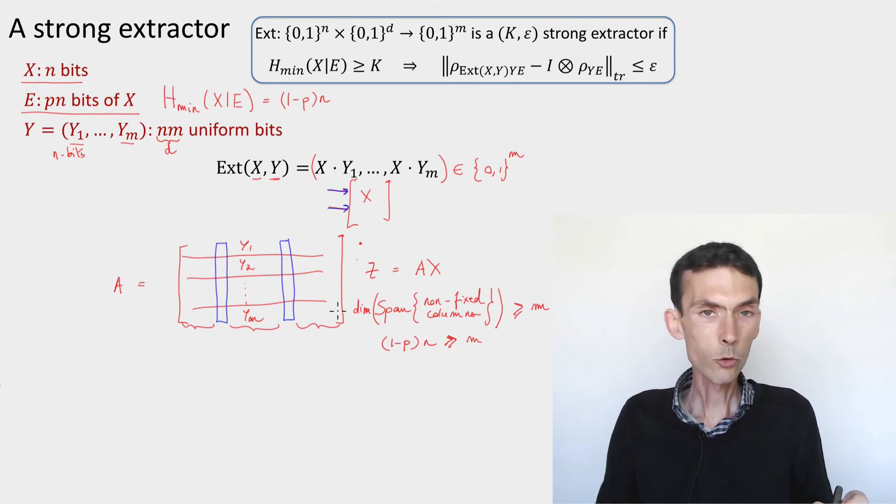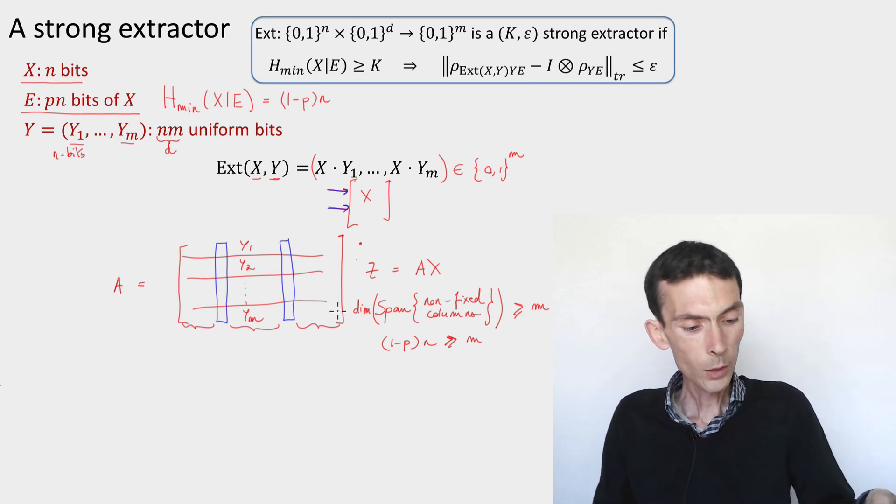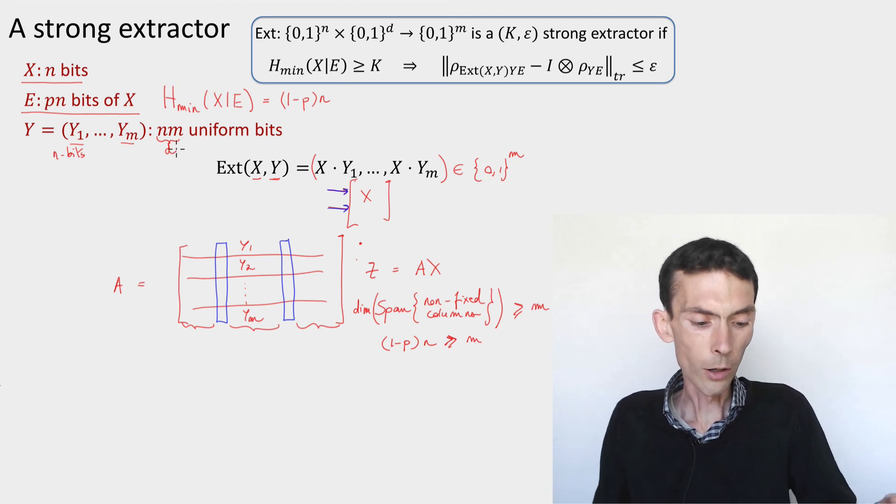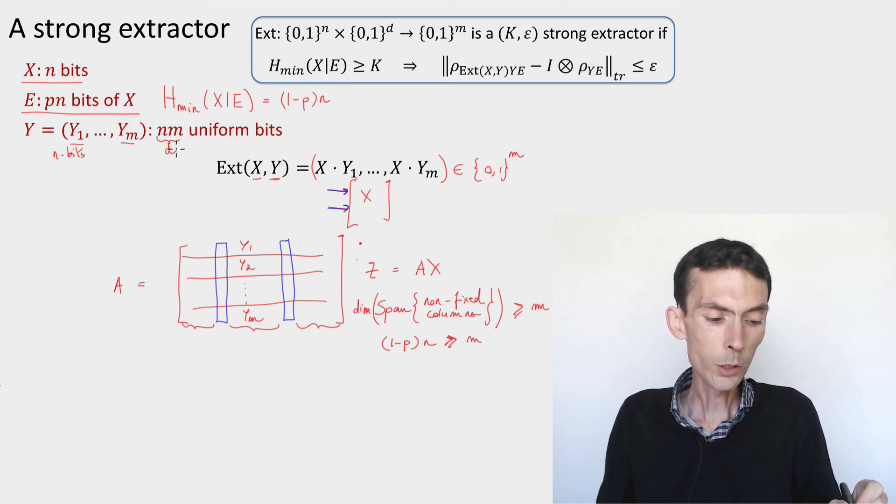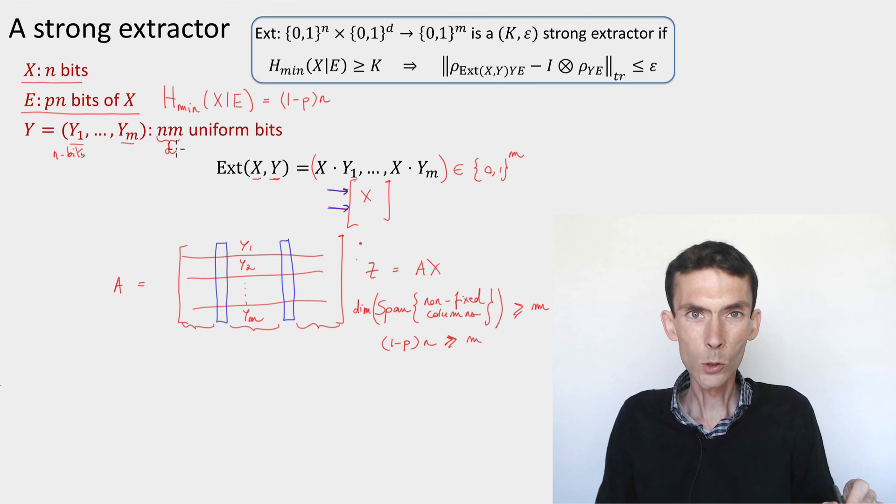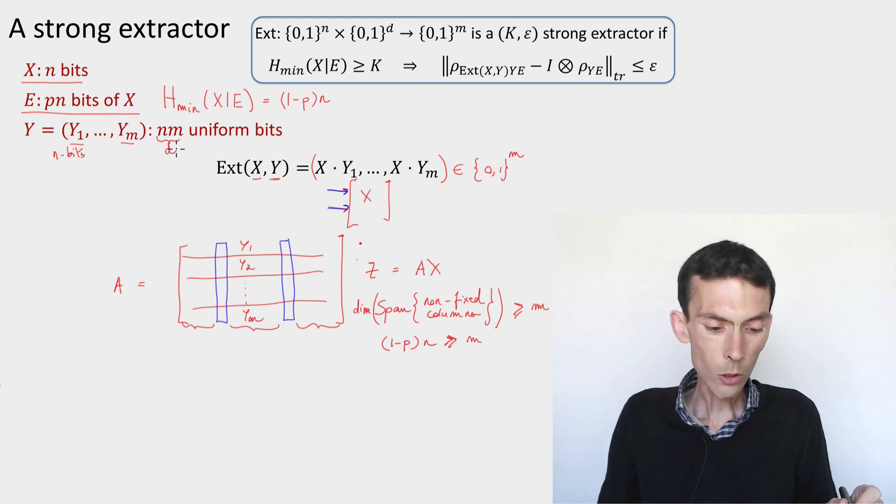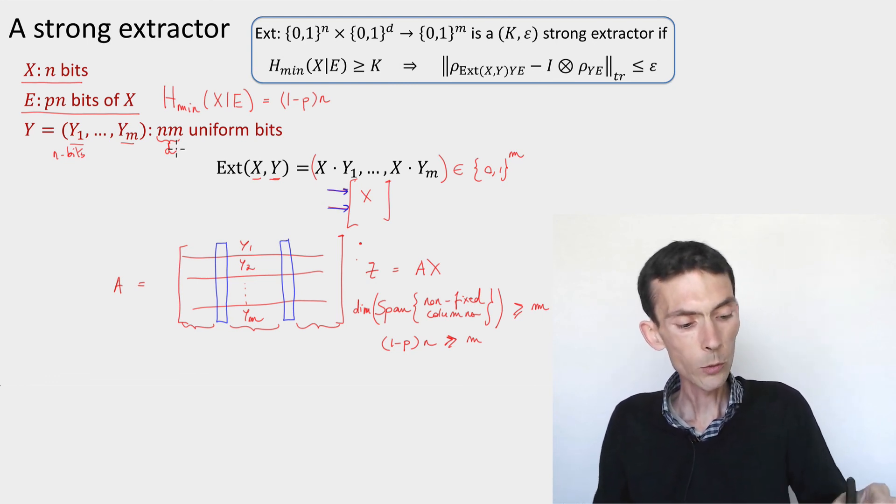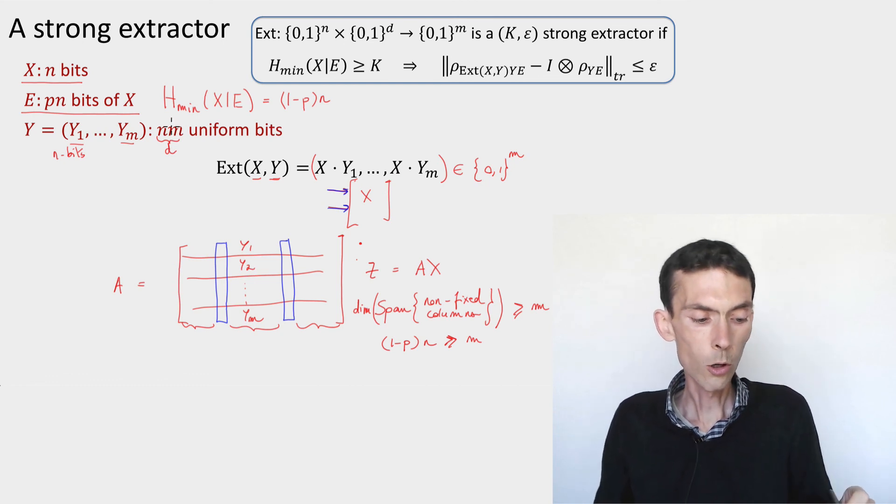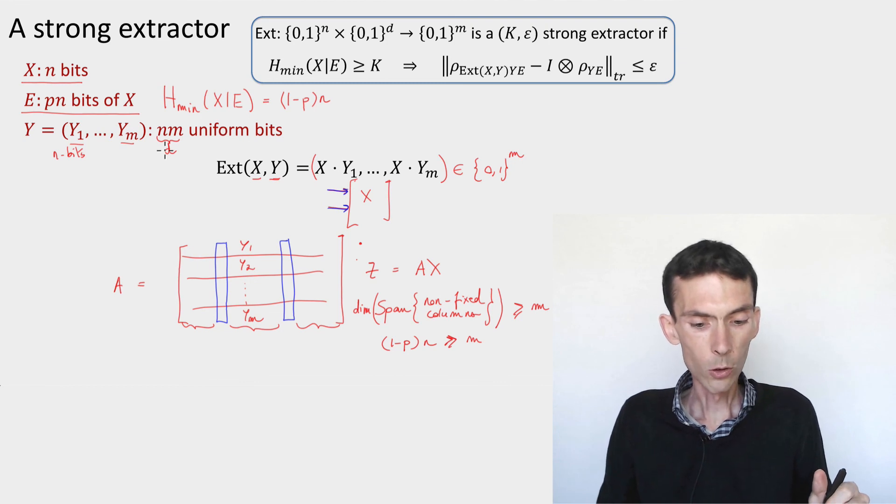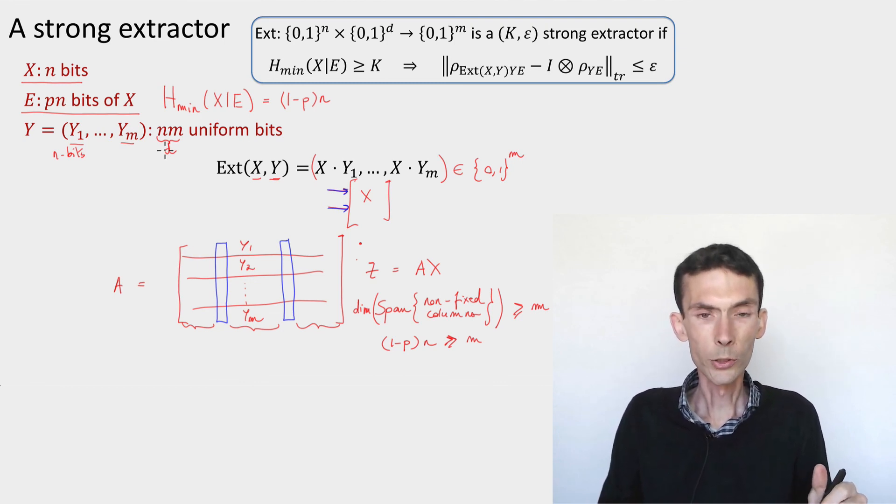So this extractor is a strong seeded extractor. It works well, it has one drawback, which is that the seed is very long, n times m uniform bits. If we think of the setting of parameters outlined in the previous module, m is kind of the same size of n, so this is a quadratic number of bits, it's a lot. So what we'll achieve a little later is that we'll bring this down to a constant times n, instead of n times m. This will be called extractors based on two universal hashing, and we're going to learn about these in the next module.